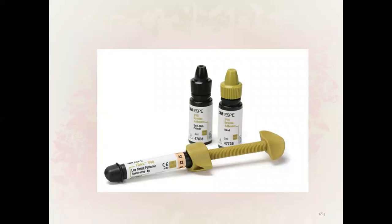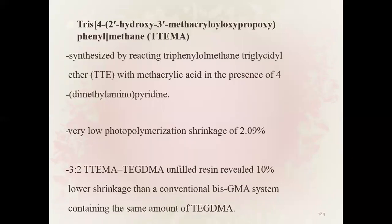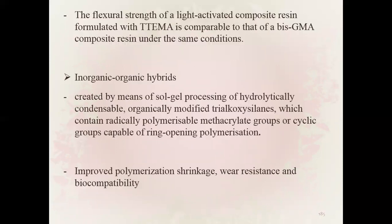TTMA is synthesized by reacting triphenylmethane triglycidyl ether with methacrylic acid in the presence of pyridine. It has very low photopolymerization shrinkage of 0.2 to 0.9 percent. 3:2 TTMA and TEGDMA blended resin will have 10 percent lower shrinkage than that of conventional Bis-GMA systems. The flexural strength of a light activated composite resin formulated with TTMA is comparable to that of a Bis-GMA composite resin under the same conditions.